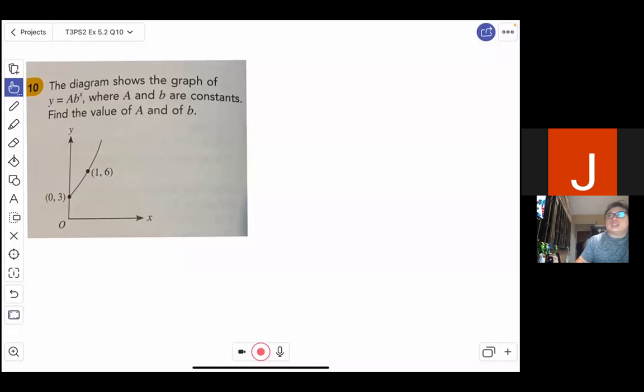The diagram shows the graph of y equals ab to the power of x, where a and b are constants. I need to find the value of a and of b. So what do we do here? Well, very simple.